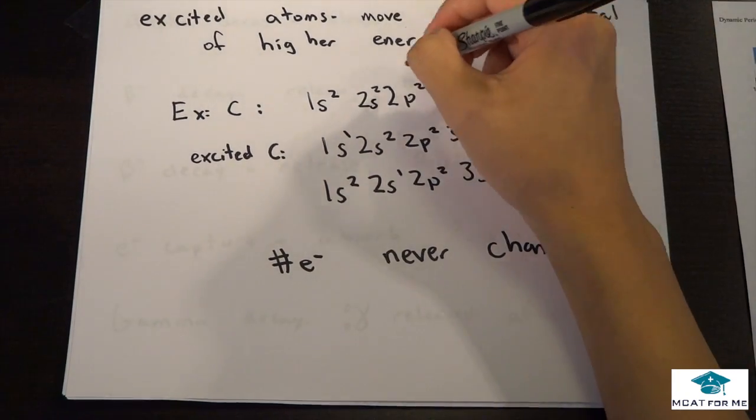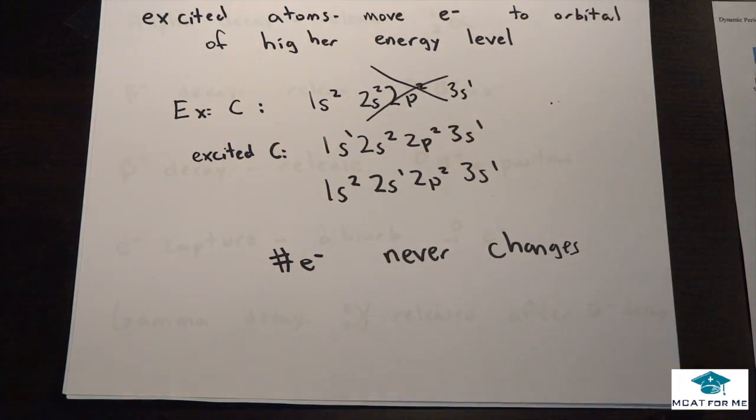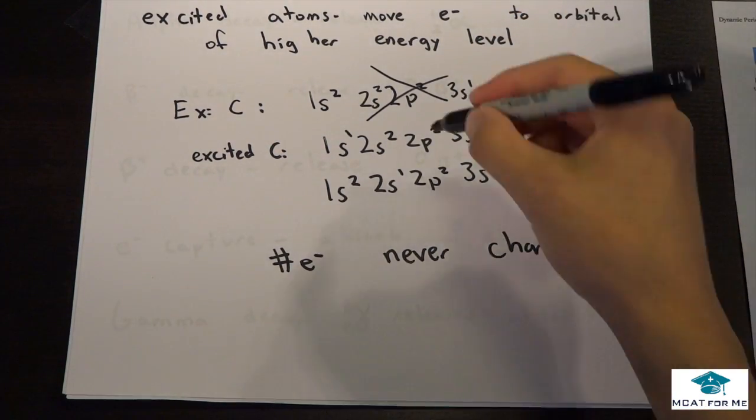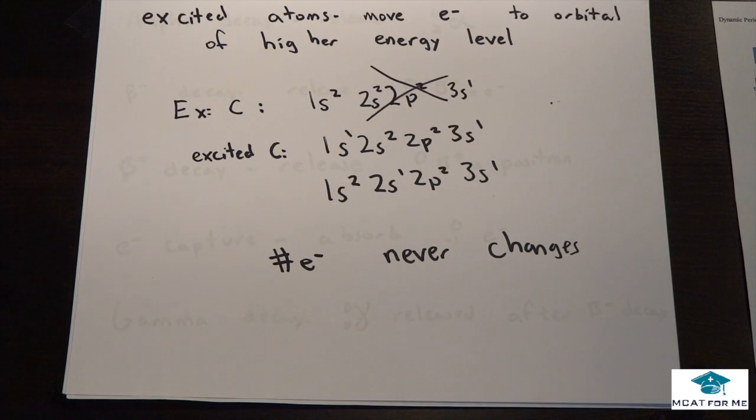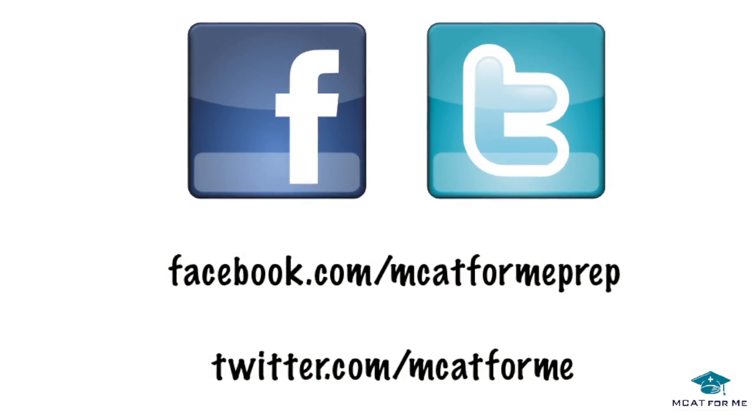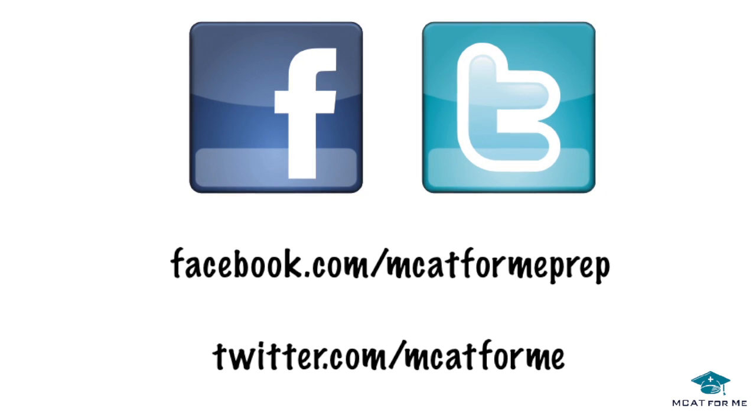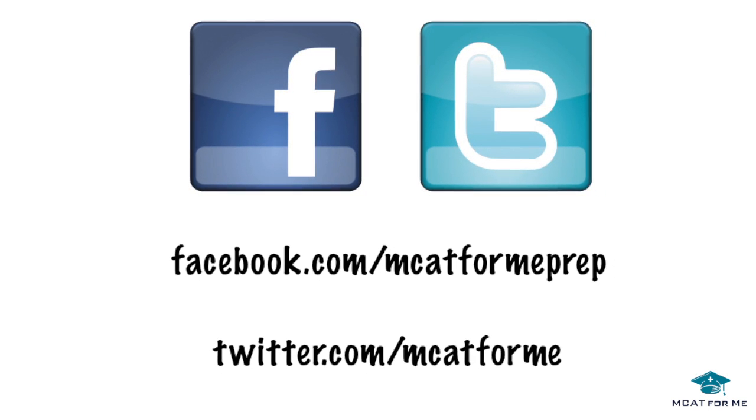So we can't say that. So this would be wrong. We can't just add a whole other electron and say that's excited. We have to take the existing number of electrons and move them to a higher energy level.